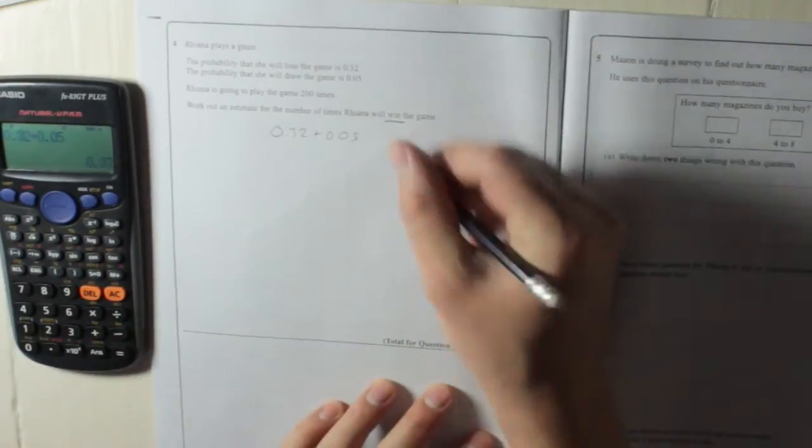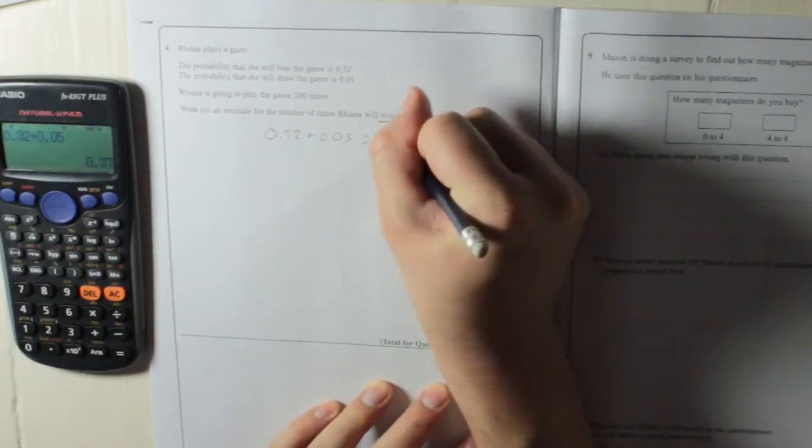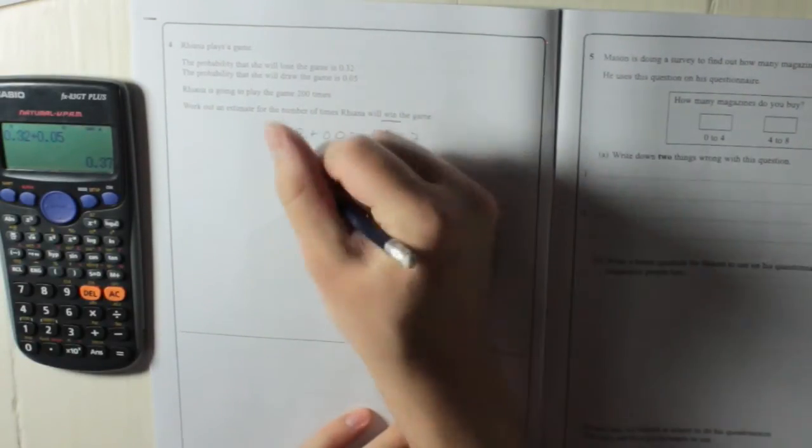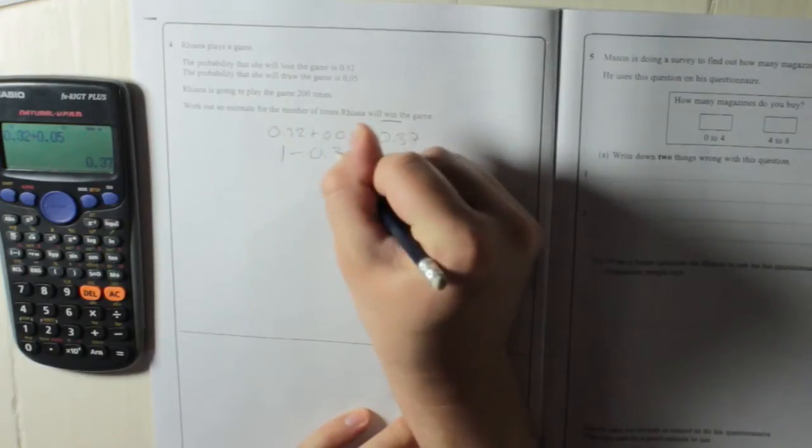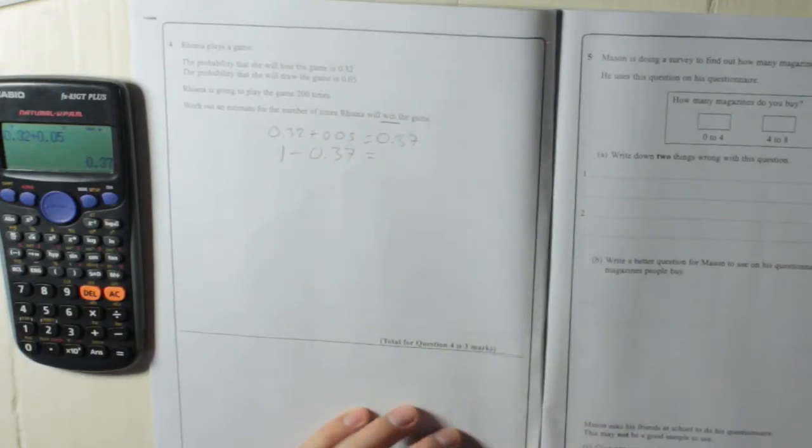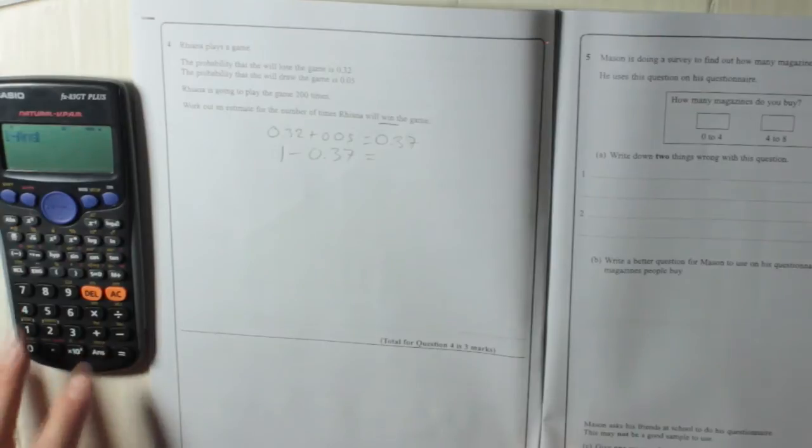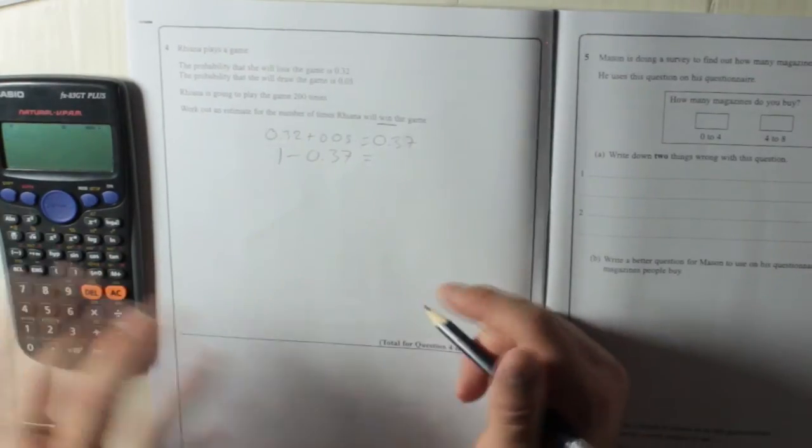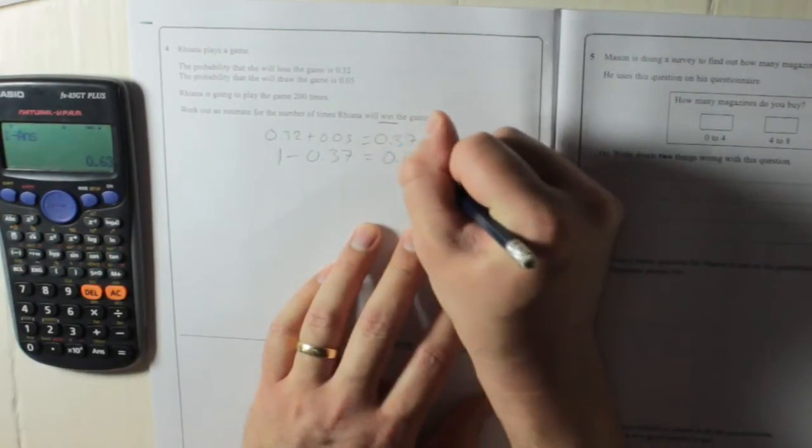Which gives me 0.37. Then I'm going to take that away from one to find out the probability that she'll win. 0.63.